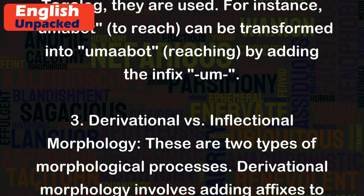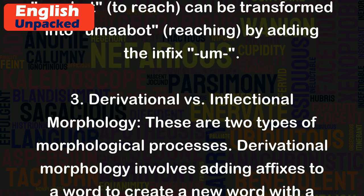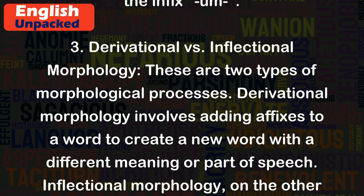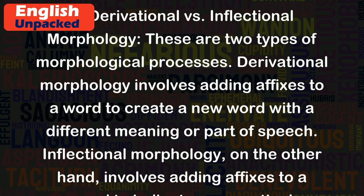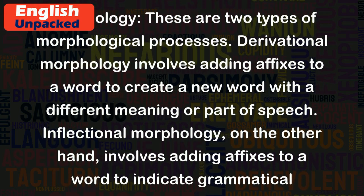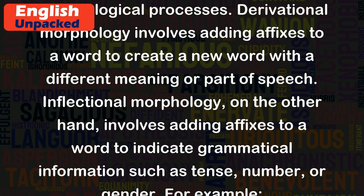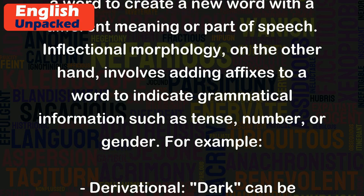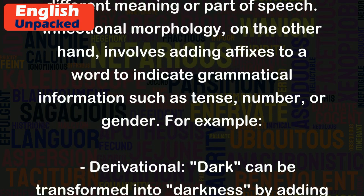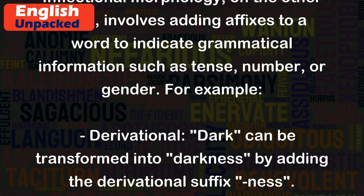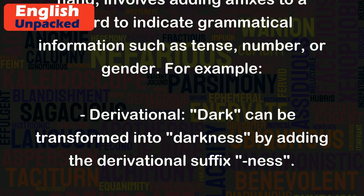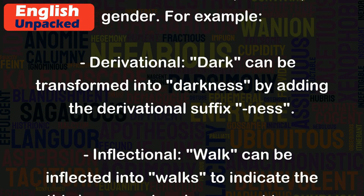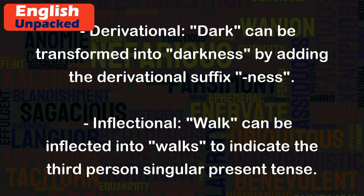Derivational versus inflectional morphology are two types of morphological processes. Derivational morphology involves adding affixes to a word to create a new word with a different meaning or part of speech. For example, 'dark' can be transformed into 'darkness' by adding the derivational suffix 'ness'.